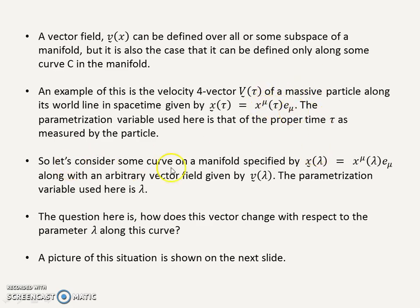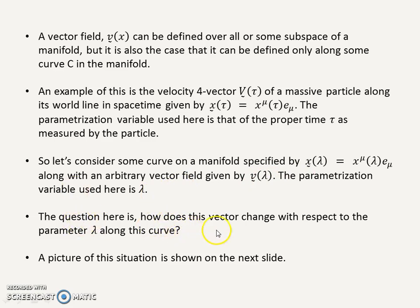We have some curve on a manifold specified by x of lambda — as with x of tau for proper time, this one is x of lambda. Here are the components and the basis vectors, along with an arbitrary vector field V of lambda, so the components of the vector are parameterized using lambda. The question here is: how does this vector change with respect to the parameter lambda along this curve?